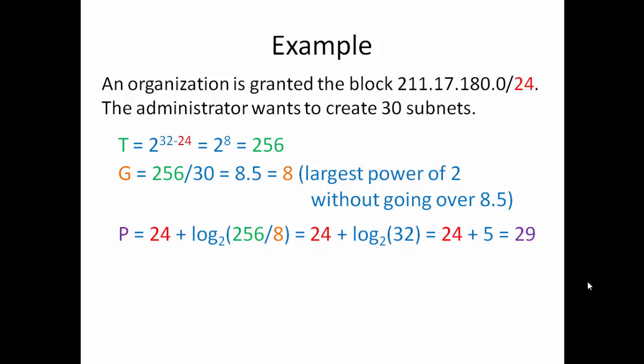And log 2 of 32 simply is what number can I raise 2 to the power of to get me 32. Well 2 to the power of 5 is 32. So 24 plus 5 is 29. That is our first address or our starting address or our network address of this subnet. 211.17.180.1 forward slash 29.